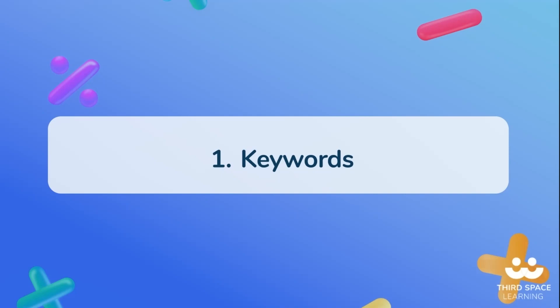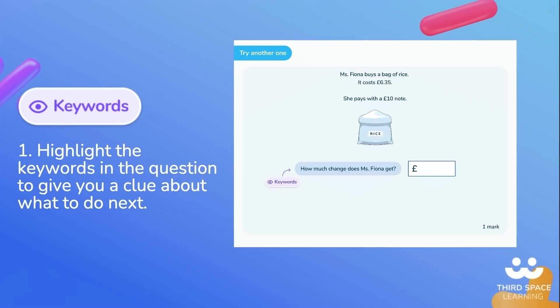Strategy one: keywords. Highlight the key words in the question to give you a clue about what to do next.